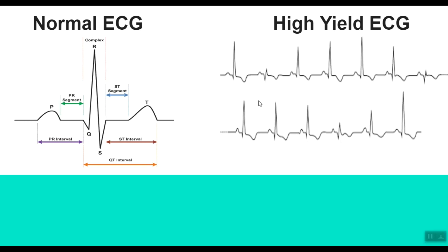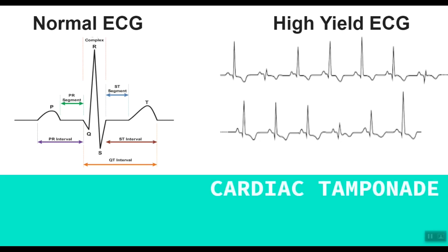The first thing you'll notice in this ECG is that the voltage of the QRS complex is not the same everywhere. The voltage is highest here, and then the voltage is lower. In other words, the voltage on the ECG is alternating between high and low. This phenomenon is called electrical alternans. Can you guess what the pathology is?